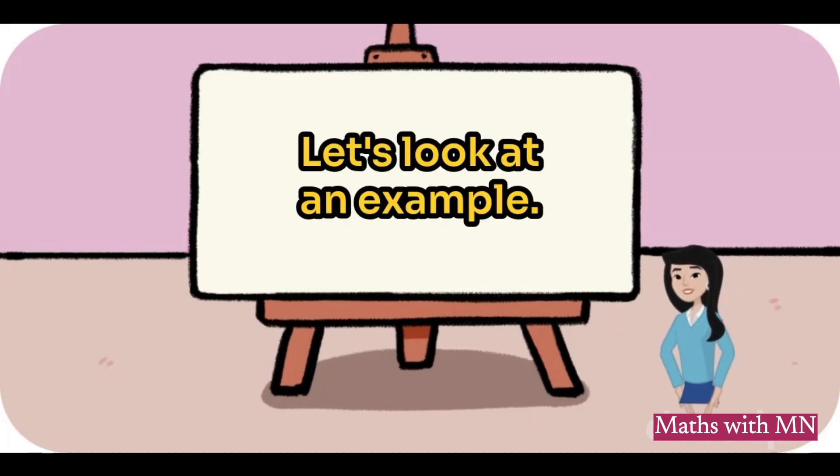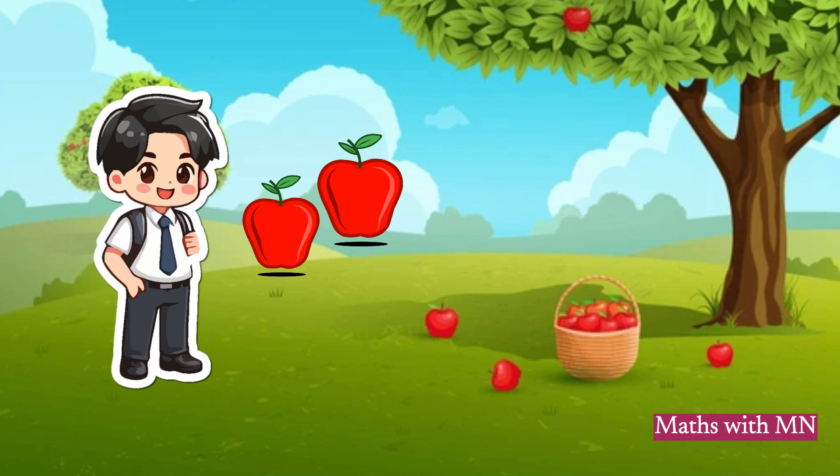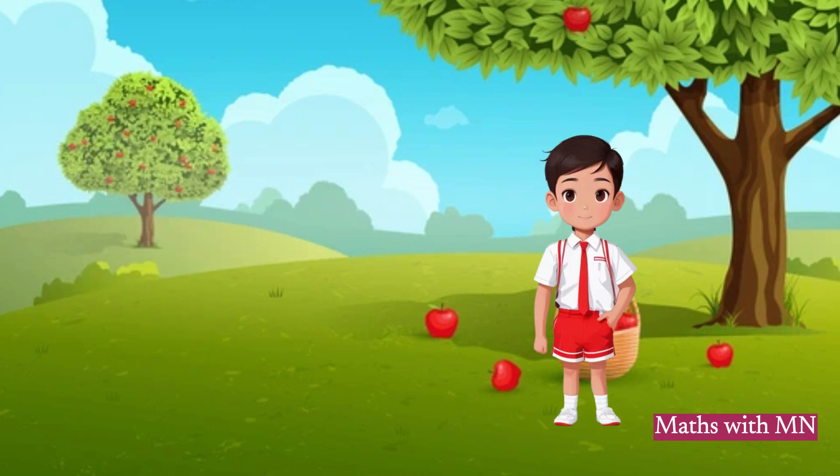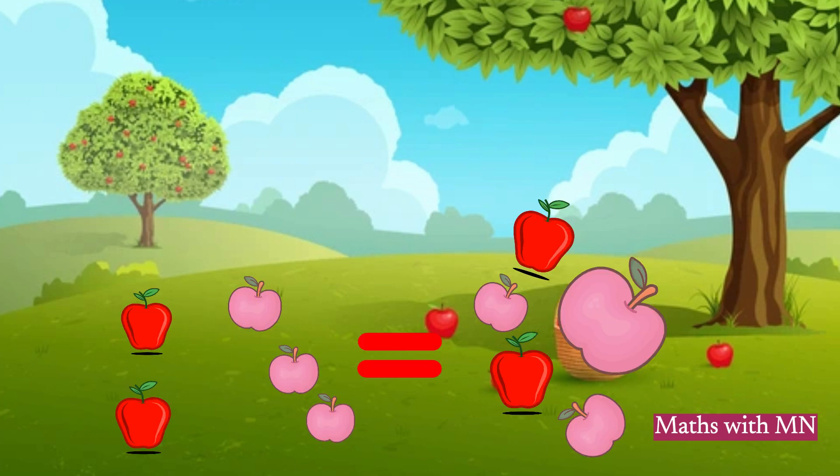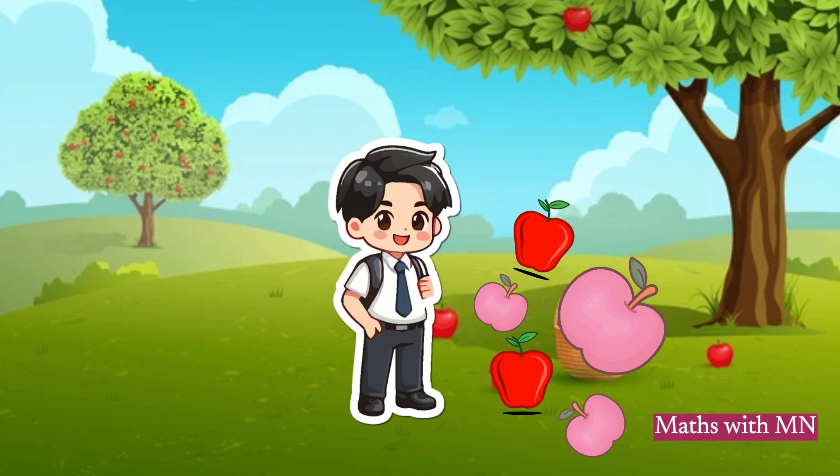Let's look at an example. If you have two apples and your friend gives you three more apples, you count them all together. Two plus three equals five. Now you have five apples.